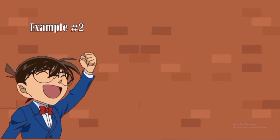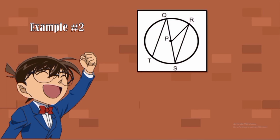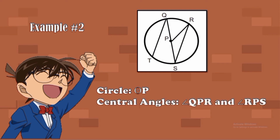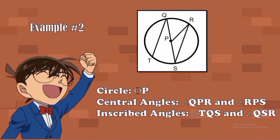Sample number two. Look at the illustration. The name of the circle is Circle P. Our central angles are angle Q-P-R and angle R-P-S, because their vertex is the center of the circle. We have two inscribed angles: Angle T-Q-S and Angle Q-S-R.